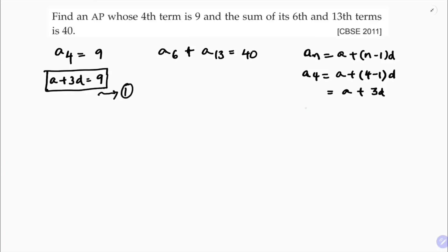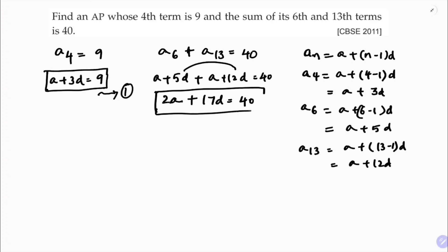Next one A6. A6 is here A plus 6 minus 1 into D so it will be A plus 5D. In the same way A13 is A plus 13 minus 1 into D which is nothing but A plus 12D. So here A6 is A plus 5D, A13 is A plus 12D. So 2 times A, 2A plus 5 plus 12, 17D equals 40. This is equation 2.